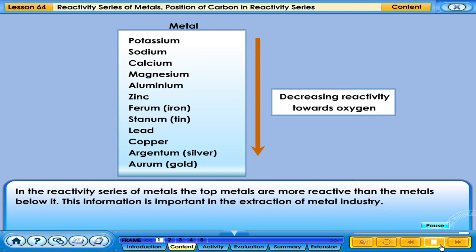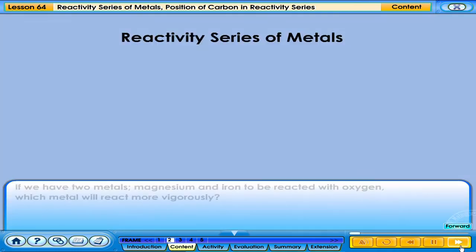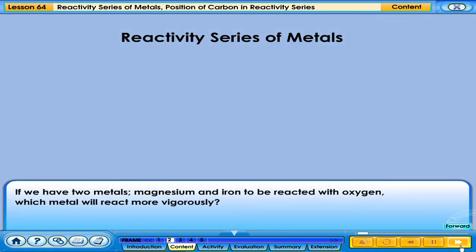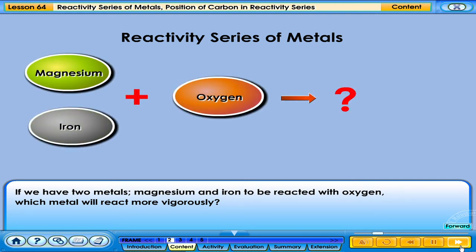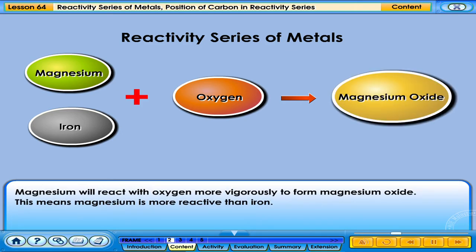This information is important in the extraction of metal industry. If we have two metals, magnesium and iron, to be reacted with oxygen, which metal will react more vigorously? Magnesium will react with oxygen more vigorously to form magnesium oxide. This means magnesium is more reactive than iron.